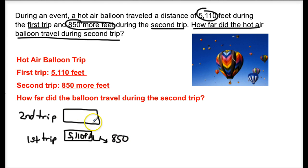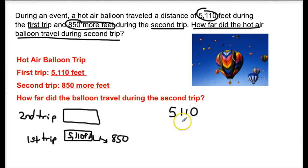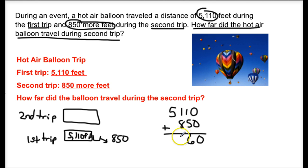In order to find out the second trip distance, I need to combine the first trip — 5,110 feet — with my additional 850 feet. So this is going to be an addition problem. I take my two values and add them together: 0 plus 0 is 0, 1 plus 5 is 6, 1 plus 8 is 9, 5 plus 0 is 5. So we have 5,960 feet.